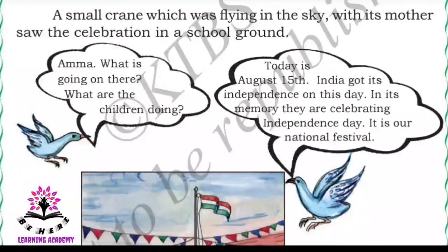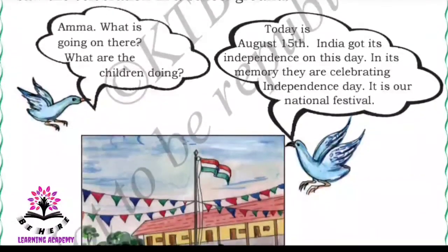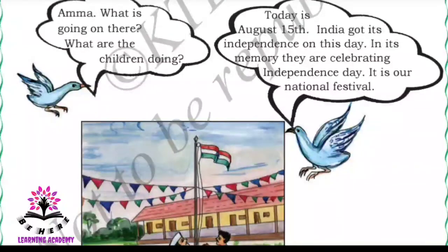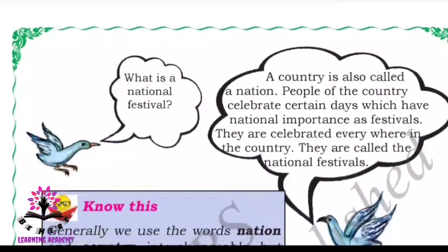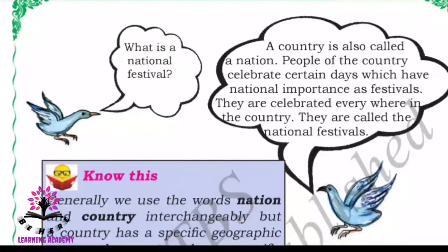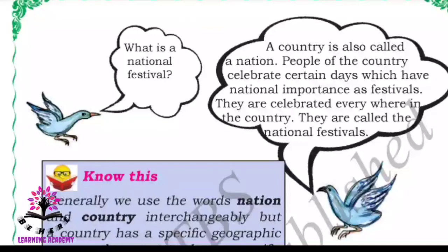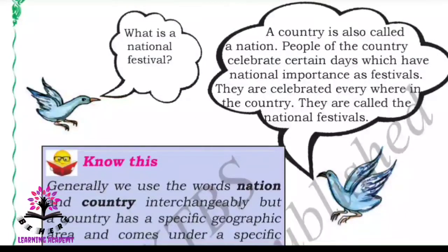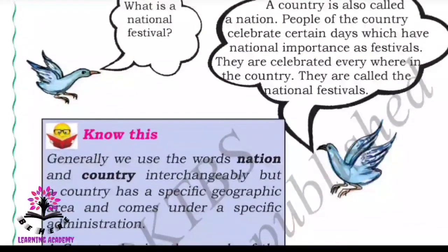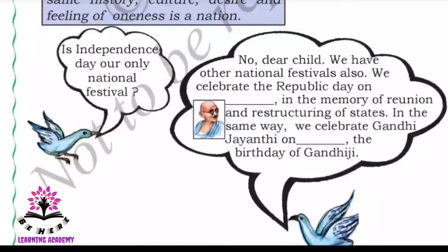A small crane flying in the sky with its mother saw a celebration in a school ground. 'Amma, what is going on there? What are the children doing?' 'Today is August 15th. India got its independence on this day; in its memory they are celebrating Independence Day. It is a national festival.' Our country is also called a nation. People of the country celebrate certain days which have national importance as festivals. They are celebrated everywhere in the country — they are called national festivals.